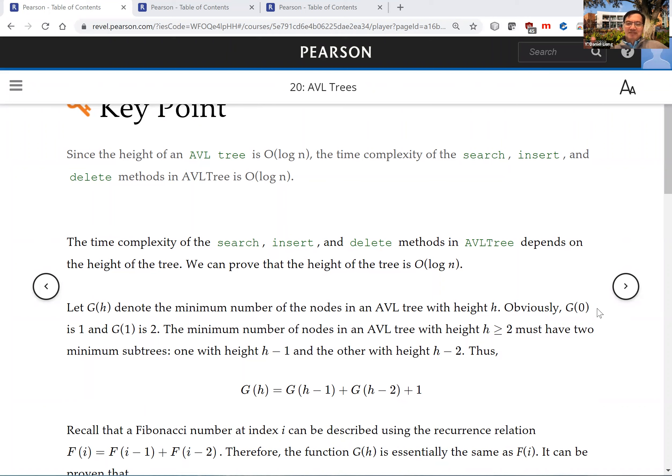Obviously, G(0) is one - if the height is zero, you have only one node. If the height is one, you have two nodes. That's the minimal number of nodes.